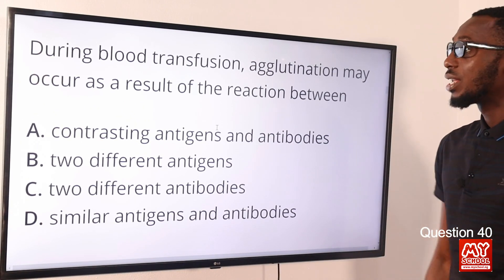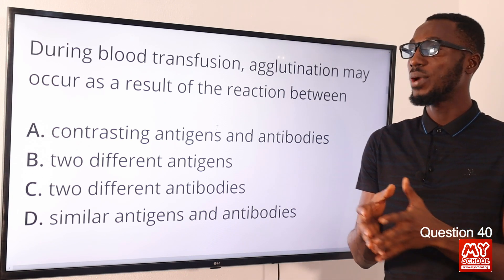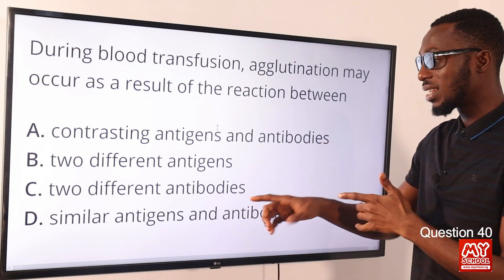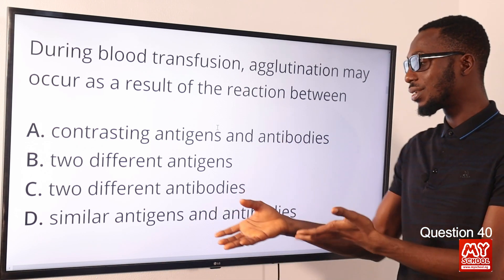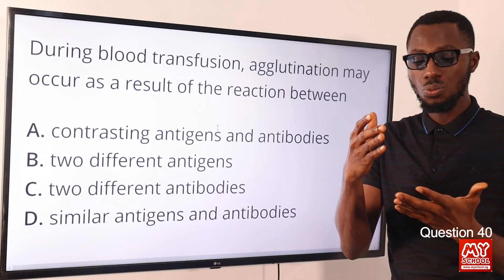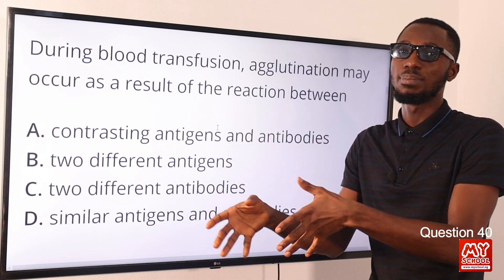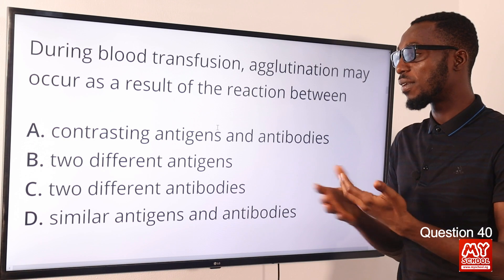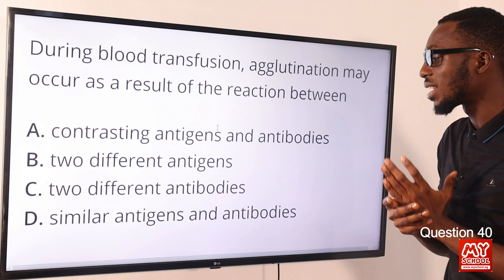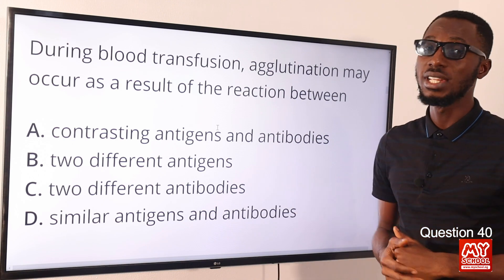Question 40. During blood transfusion, agglutination may occur as a result of a reaction between an antigen when it mixes with its corresponding antibody. For your blood group, the antigens are located on the red blood cell and the antibodies on the plasma. The correct option is option D — corresponding antigens and antibodies.